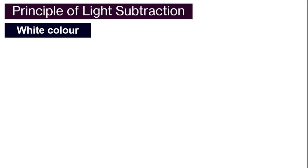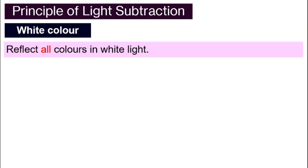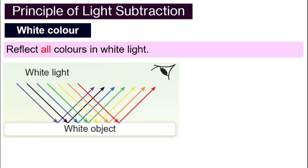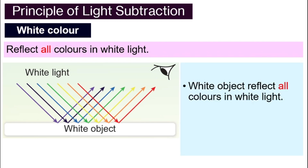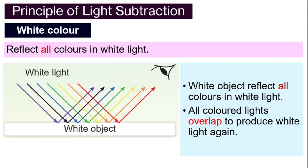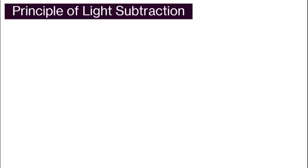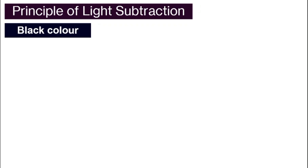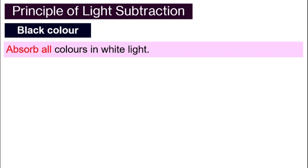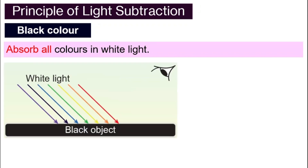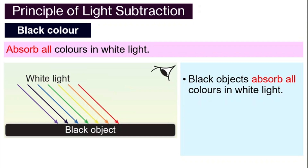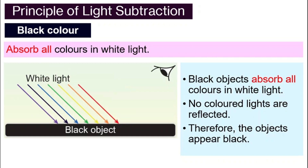What if the object is white in color? White is made up of all three primary colors, so a white colored object will actually reflect all colors in the white light, and then all these colors overlap and produce white light again — so the object appears white to us. How about black? A black object will actually absorb all colors in white light; no light will be reflected. All colors are absorbed and so the object appears black to us.